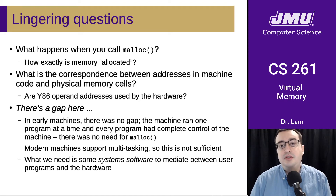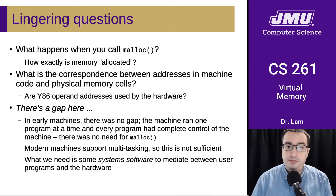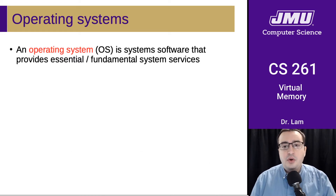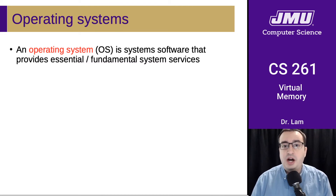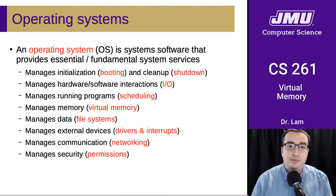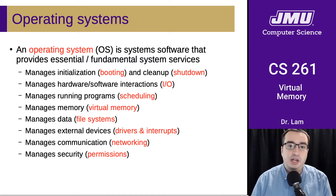What we need is some kind of systems software to mediate between the user programs and the hardware. The particular kind of system software we're going to talk about is called an operating system, or OS. This is systems-level software that provides essential and fundamental system services. Modern operating systems provide a wide range of services from booting and shutdown to scheduling, virtual memory, networking, and many other things.